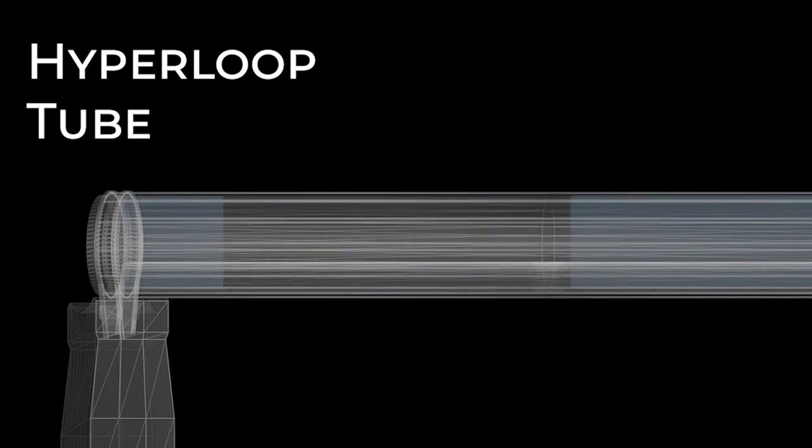To safely maintain such an environment, it is likely that the Hyperloop tube would need to run underground to reduce the likelihood of rapid depressurization in the event that the tube is punctured.